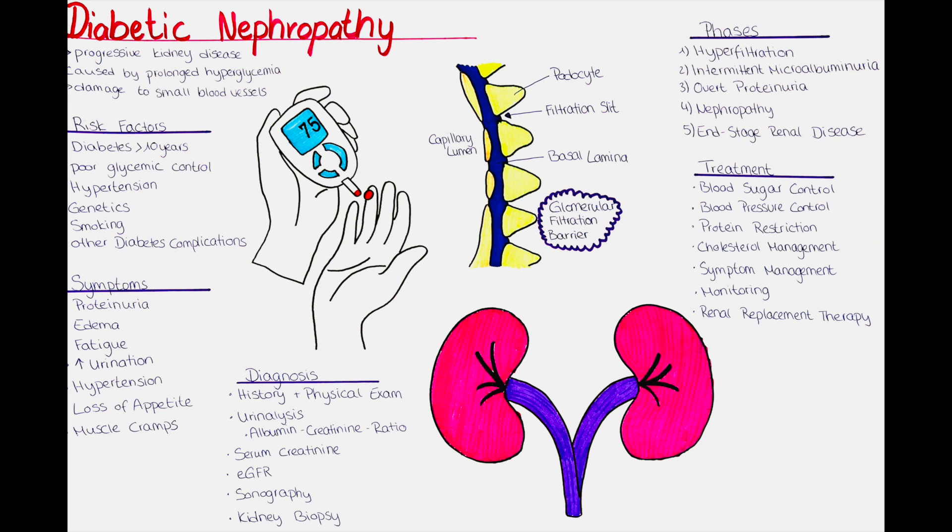Phase 5 is end-stage renal disease. This is the final phase of diabetic nephropathy. At this stage, the kidneys have lost almost all of their function and the patient requires renal replacement therapy, such as dialysis or kidney transplantation.